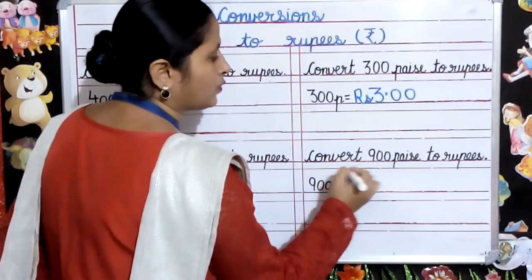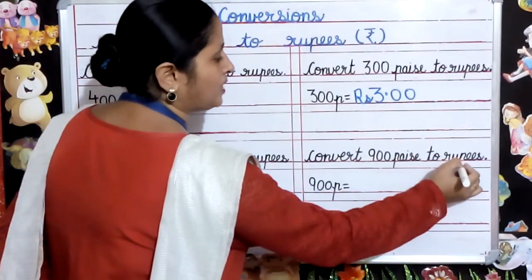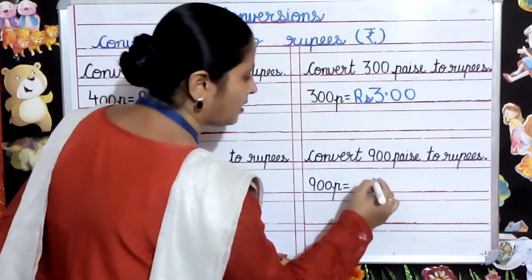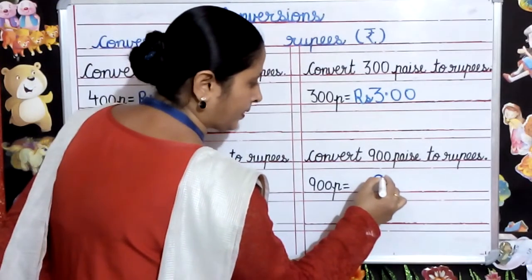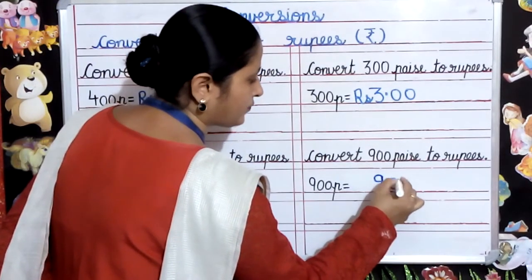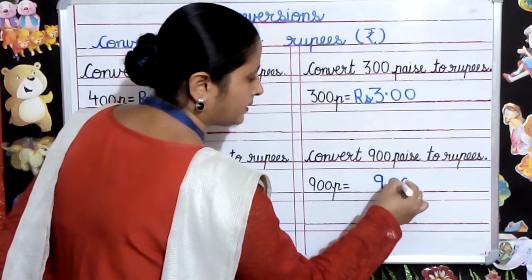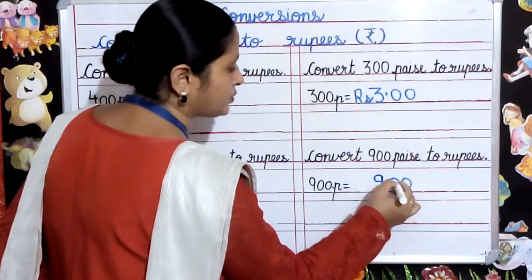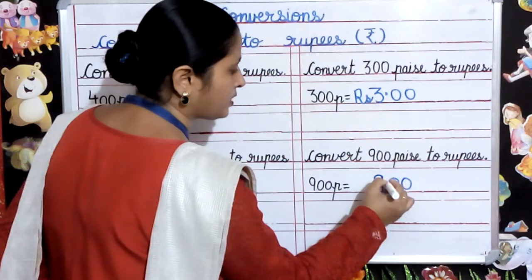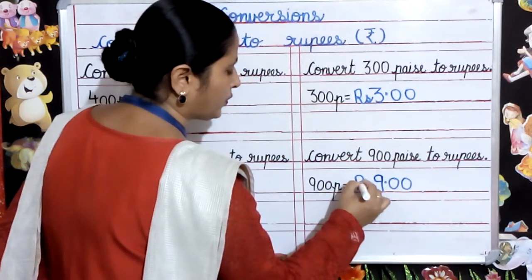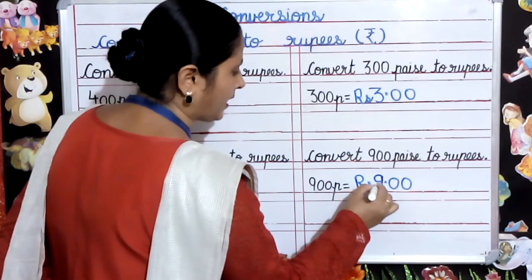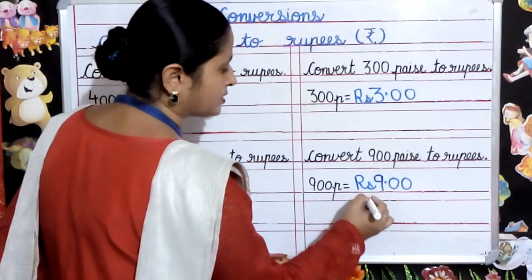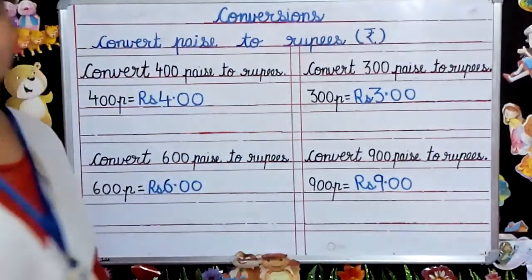Next, convert 900 paise to rupees. For converting 900 paise to rupees, we are going to write 900 first, then we will count 2 digits from the right — 1, 2 — and put a point here and write rupees in the beginning. So 900 paise equals rupees 9.